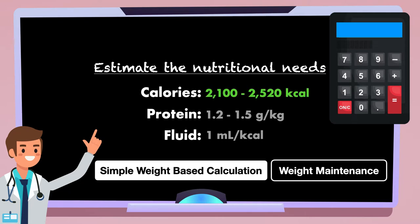With protein, we'll start with 1.2 and multiply it by 84 to get a lower end of 100. Then we'll take 1.5 and do the same, giving us an upper end of 126.